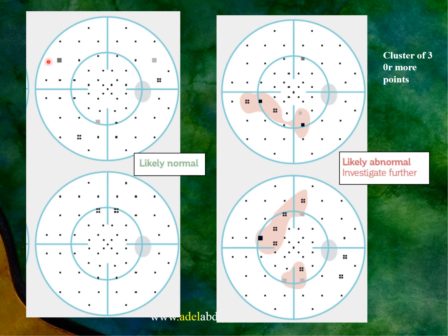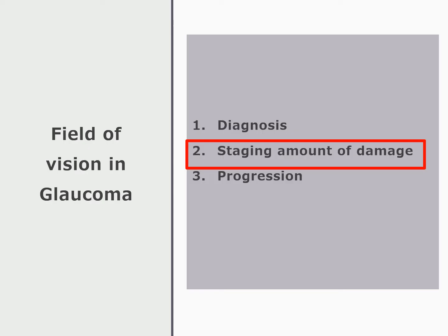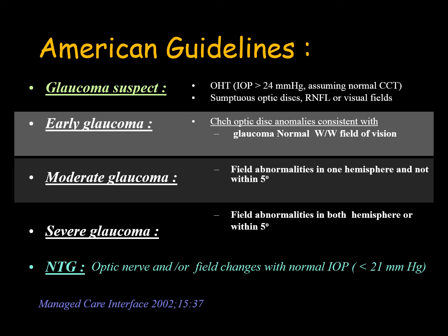Two points or one isolated point has no diagnostic value. The visual field helps in diagnosing glaucoma but also in staging the amount of damage. According to the American guidelines: early glaucoma is characterized by an optic disc anomaly characteristic of glaucoma with a normal visual field. Moderate glaucoma has characteristic disc anomaly and field changes in one of the two hemispheres but not inside the central 5 degrees.